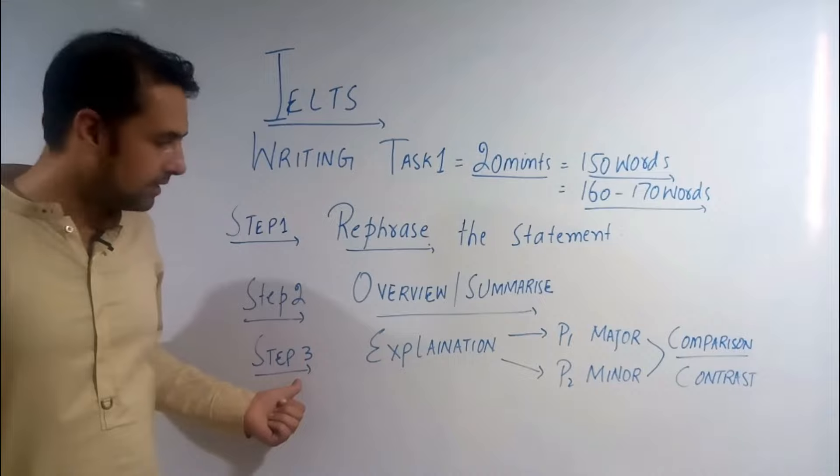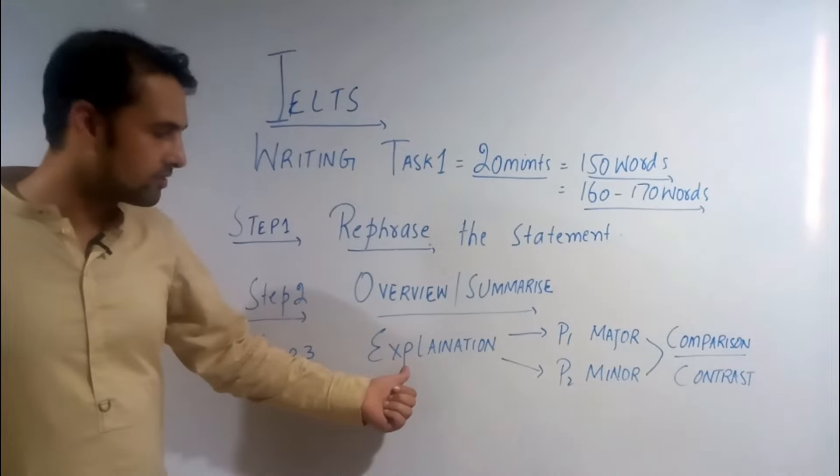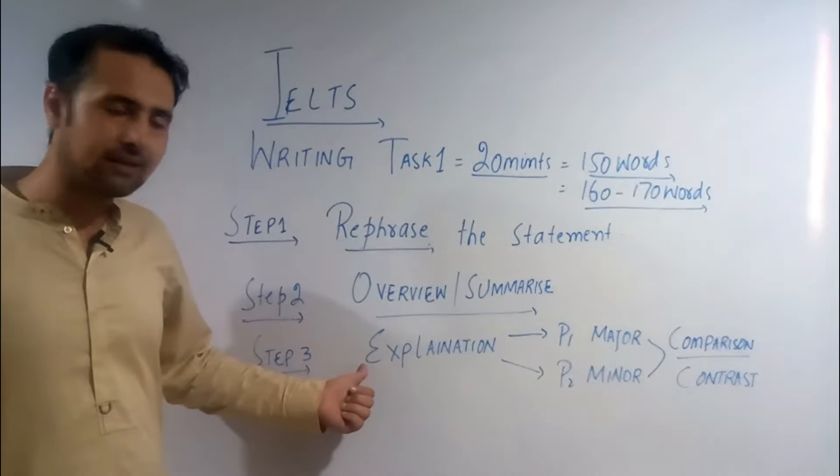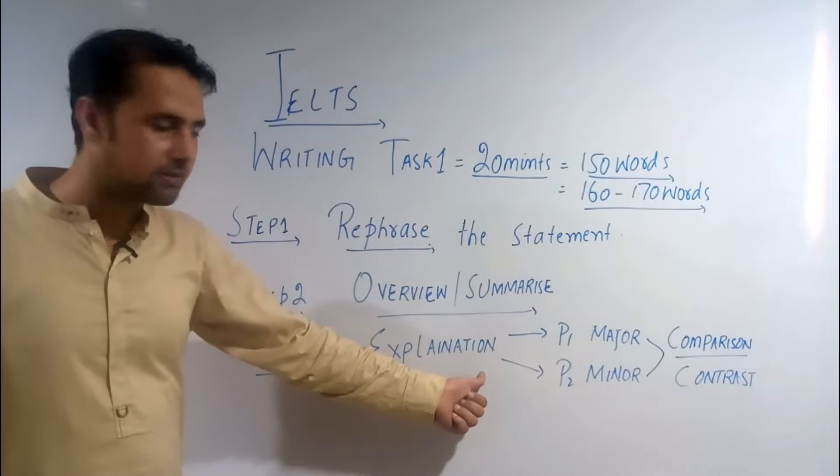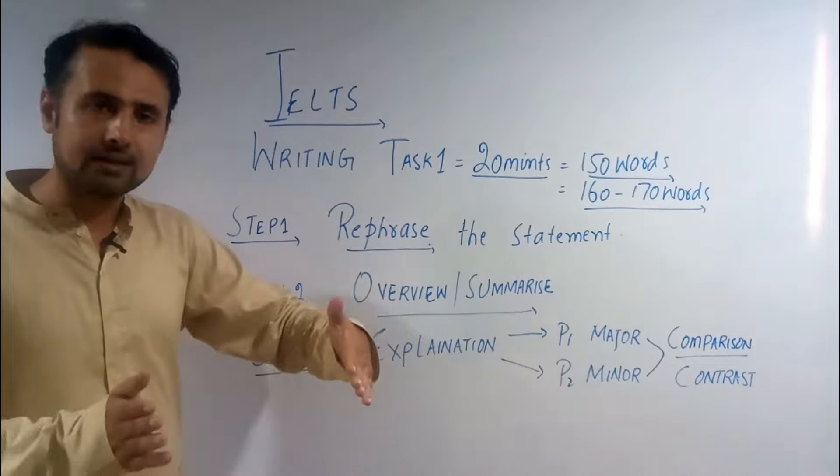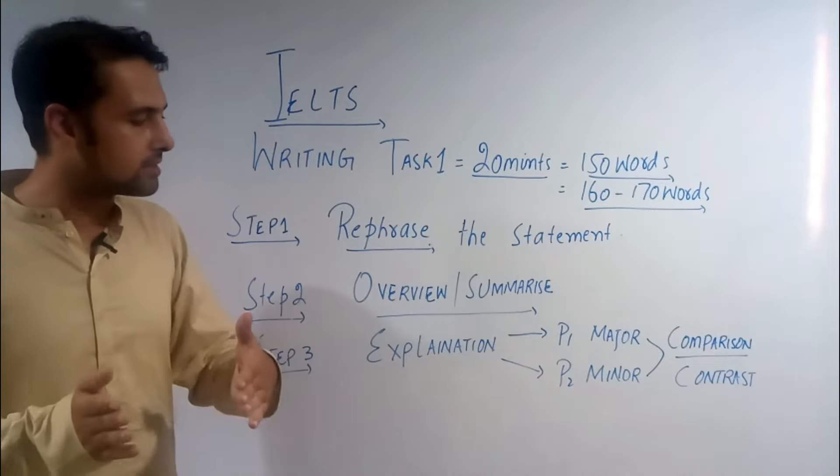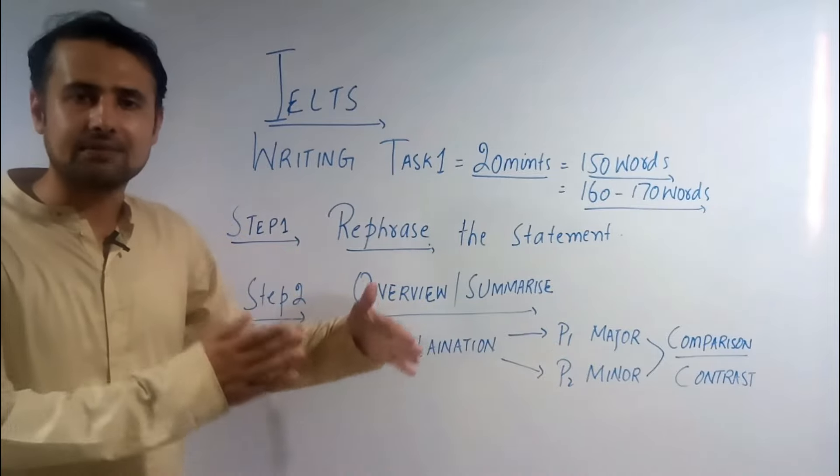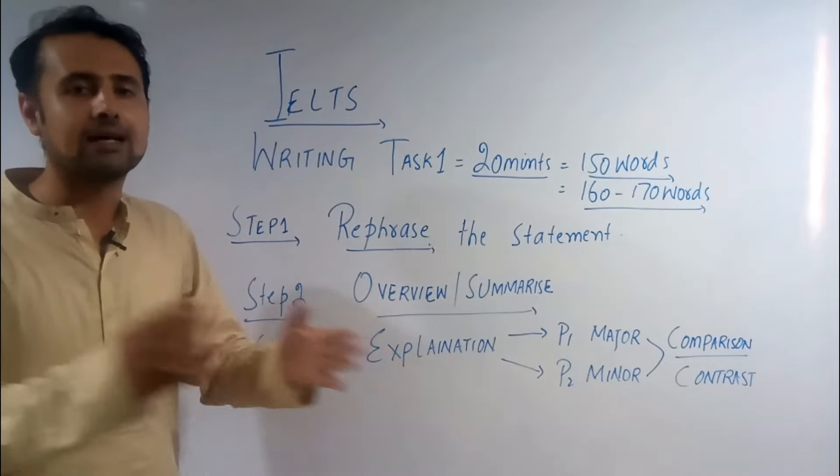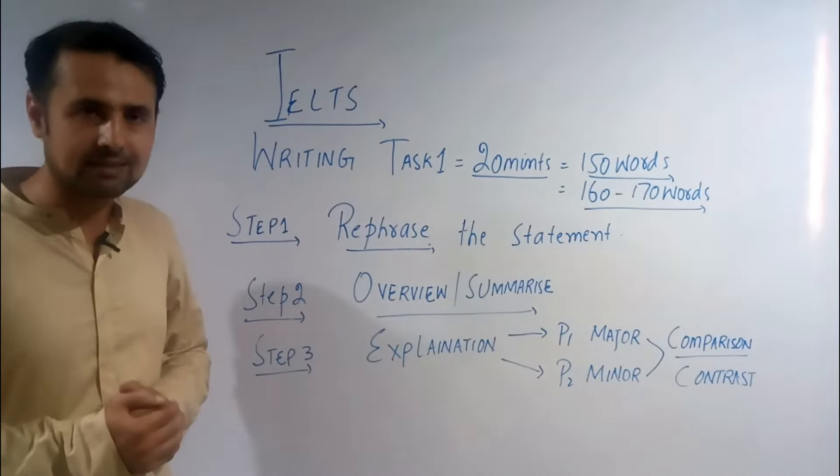In Step 3, it is explanatory time. You need to explain things in detail. Make two paragraphs. In Paragraph 1, try to compare and contrast major details, whatever is given in the graph or other visual elements in front of you.